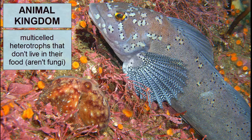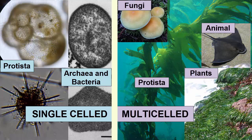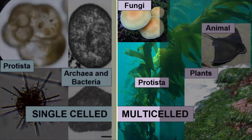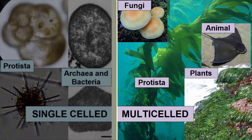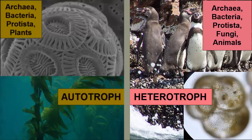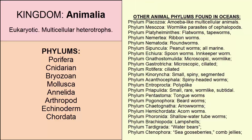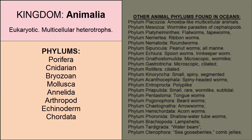The Animalia kingdom consists of multi-cellular eukaryotic heterotrophs that do not live in their food as fungi do. To quickly review the five kingdoms: single-celled organisms can be found in the Archaea, Bacteria, and Protista kingdoms; multi-celled organisms are found in Protista, Fungi, Plant, and Animal kingdoms. Heterotrophs can be found in all kingdoms except plants; autotrophs in all kingdoms except animals and fungi. There are many marine phyla in the oceans, and this tutorial highlights a small selection.